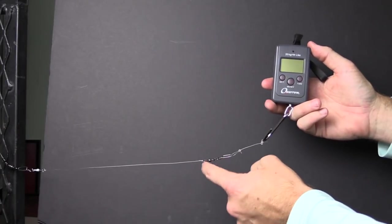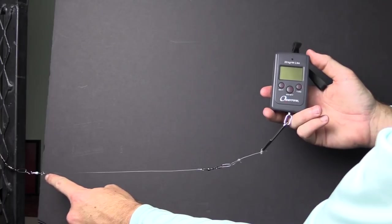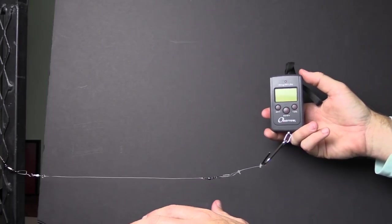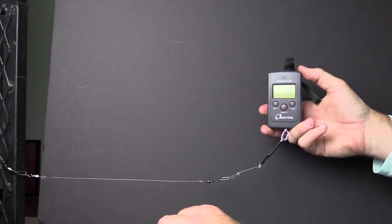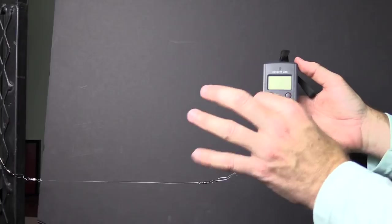In this video, we're going to be testing the clinch knot against the strength of the uni knot. These are two very popular knots - they're both easy to tie, they're both known to be very strong, but which one is stronger? That is what this video is going to answer.